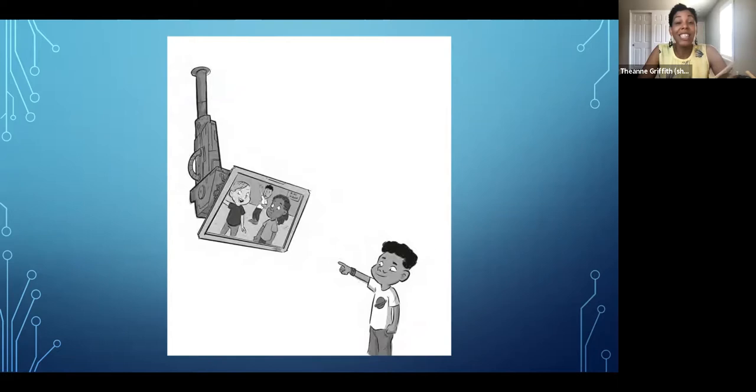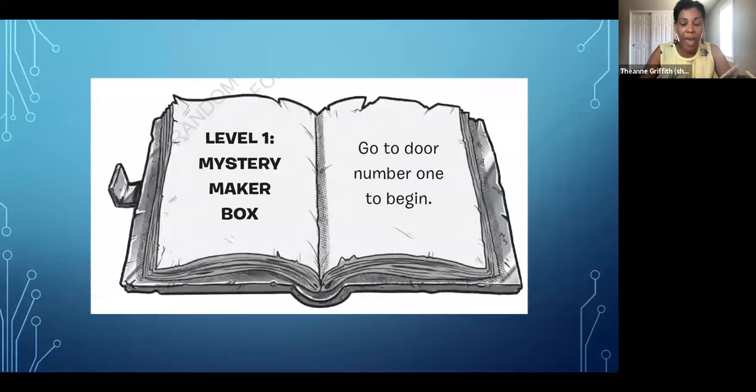Pablo and Violet said together, let's learn about our senses. The pages of the maker manual began to turn slowly but quickly gained speed. Then suddenly they stopped. The page read, level one, mystery maker box. Go to door number one to begin. Dr. Crisp closed the maker manual and stuffed it in a backpack lying by her feet. Pablo, Violet, and Henry felt something on their wrists. Our magnificent maker watches, Pablo said. We need them to keep track of maker minutes, Violet explained to Henry. We can only come back if we finish in time.